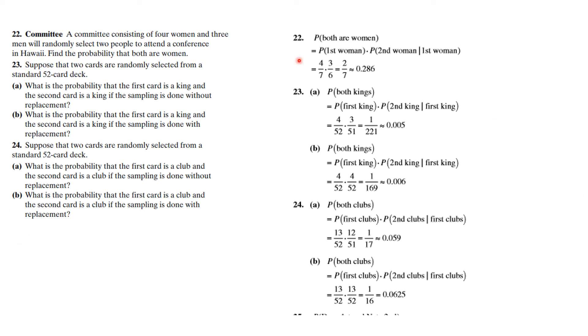So in problem 22, the probability of the most women is we use the general definition and we get this number. In part B, the probability of both kings is this. And you see the probability changes after you draw something out because you didn't replace the first king.